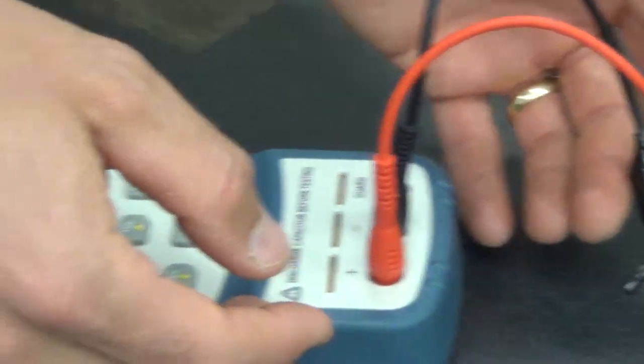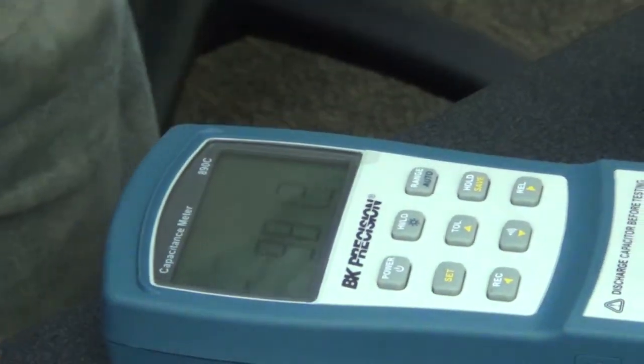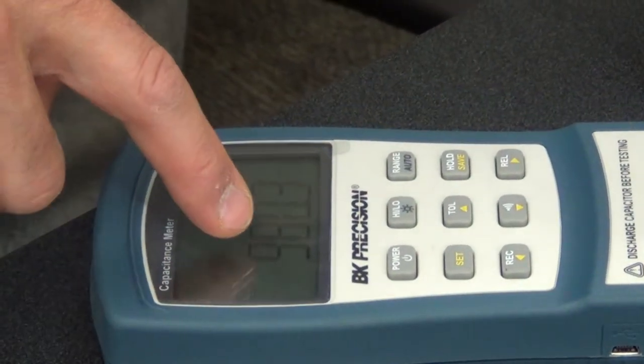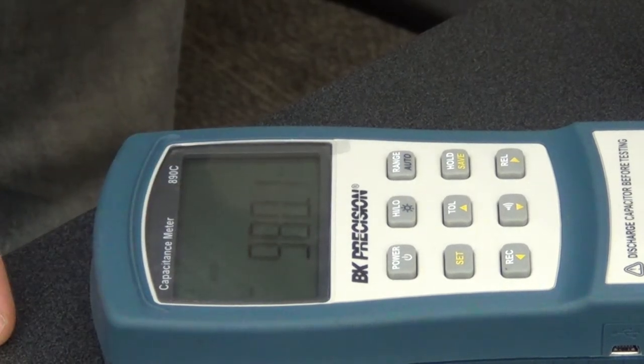And so I also happen to have here a very fancy capacitance meter. These little guys are pretty expensive. So let's test it. Now this is labeled one microfarad. What does the micro mean? A micro is one one thousandth.